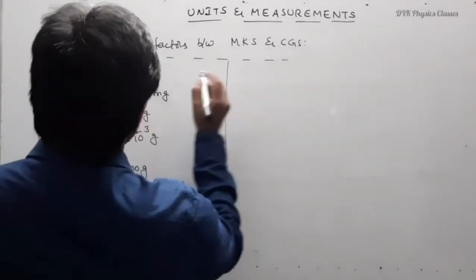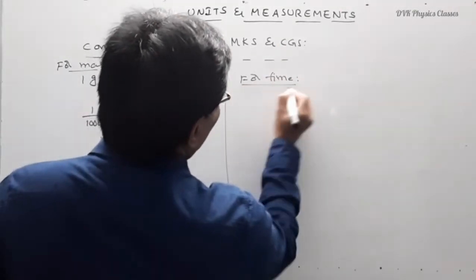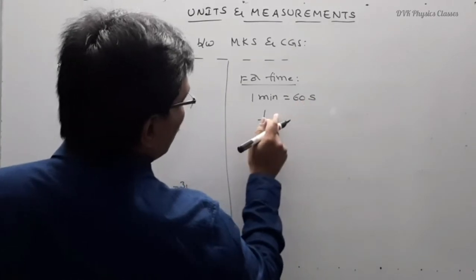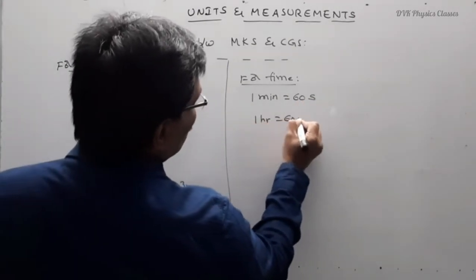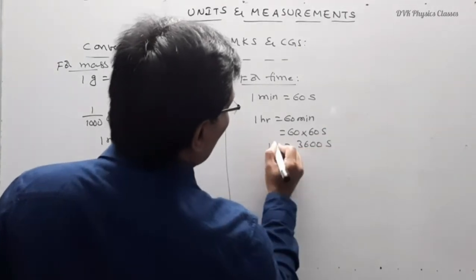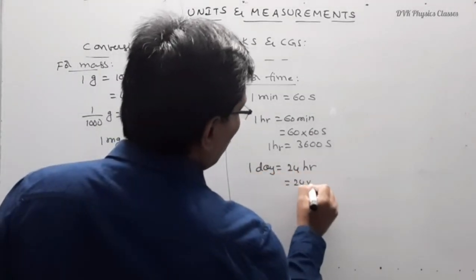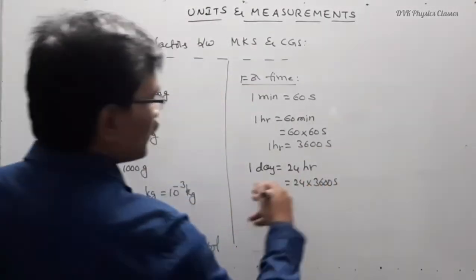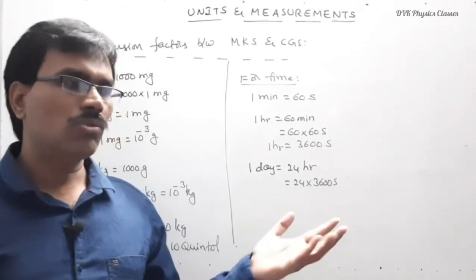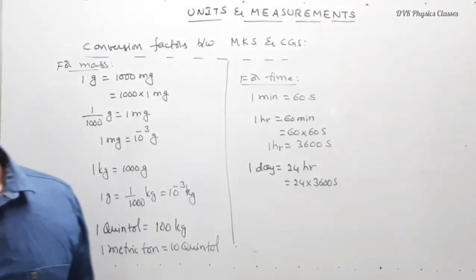Next for time: 1 minute equals 60 seconds. 1 hour equals 60 minutes, which equals 3600 seconds. 1 day equals 24 hours; 24 into 3600 seconds gives the total seconds in a day. You can find how many seconds are in 12 hours: 12 hours into 60 minutes into 60 seconds. Like that, you can find the number of seconds in any given time period.